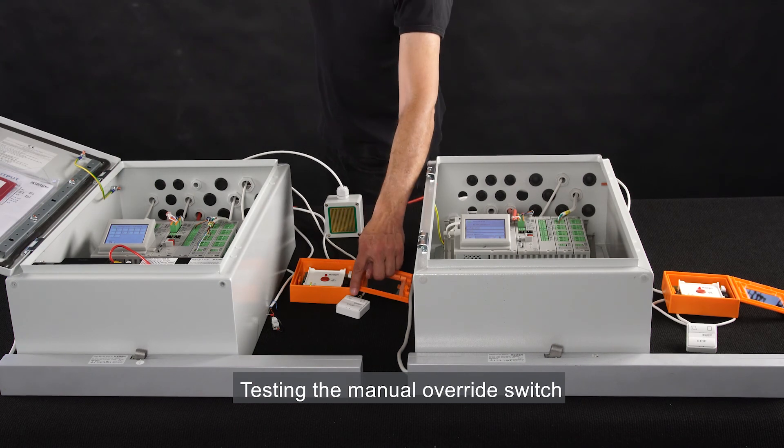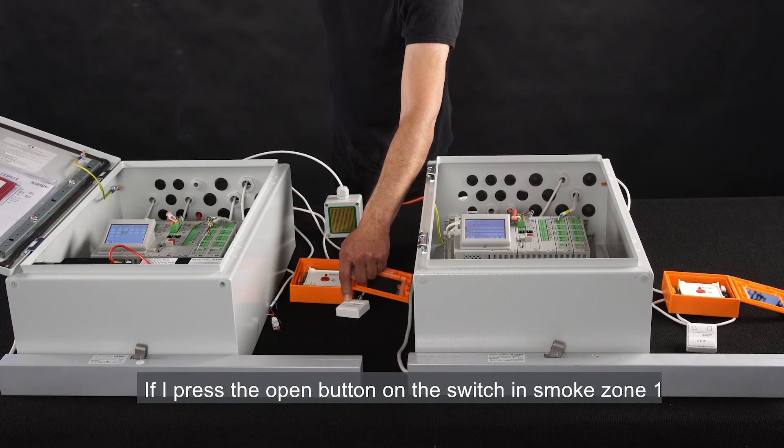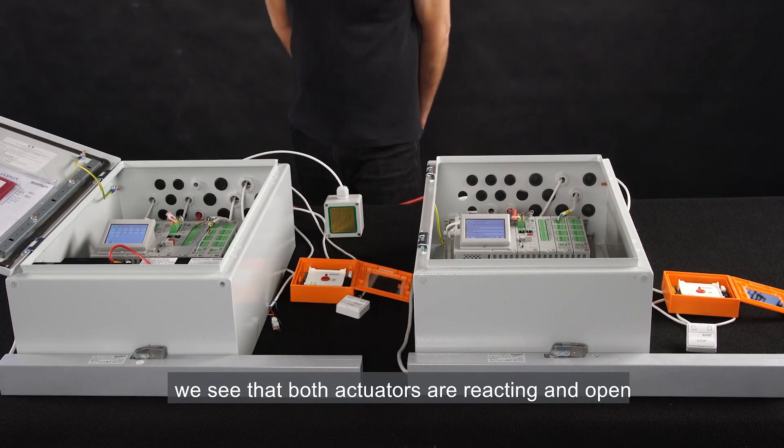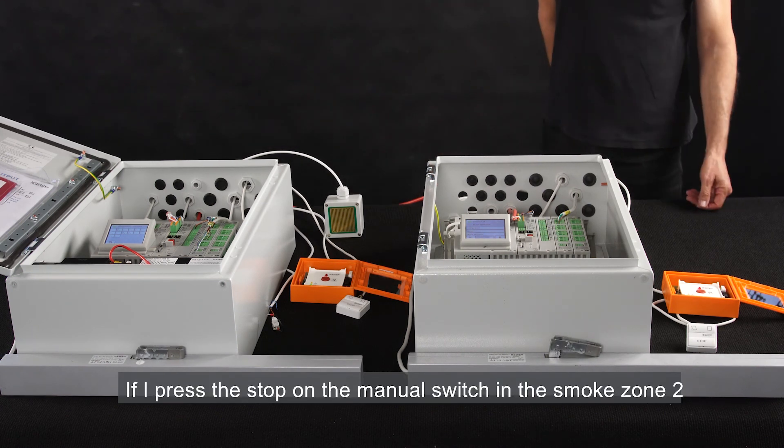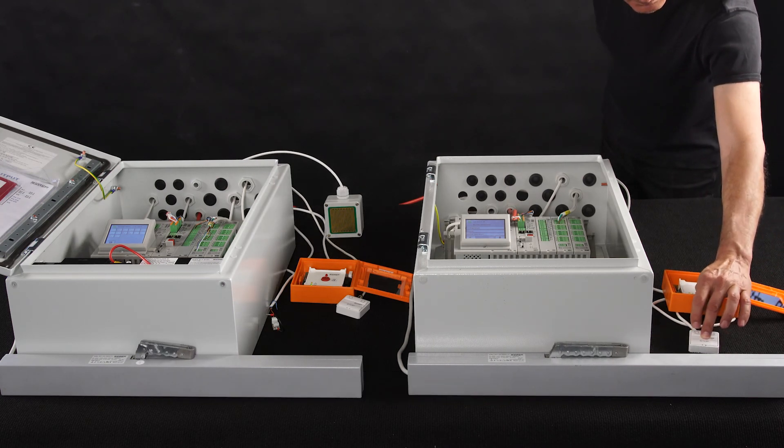Testing the manual override switch. If I press the open button on the switch in smoke zone 1, we see that both actuators are reacting and open. If I press the STOP on the manual switch in smoke zone 2, both actuators stop.